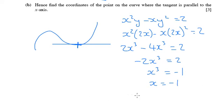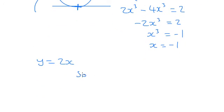So that's the x-coordinate, and we know that y equals 2x, so y equals 2 lots of negative 1 to negative 2. So the stationary point is negative 1, negative 2.